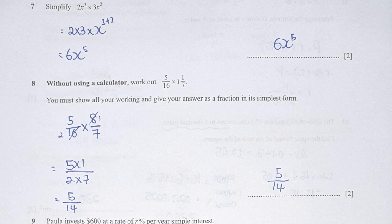Question 8, first you change the mixed numbers into improper fraction, which is 8 over 7. So 5 over 16 times 8 over 7. I simplify it between the number 8 and 16. Then you get your final result as 5 over 14.